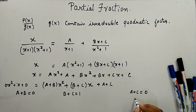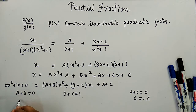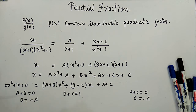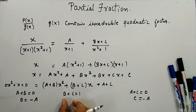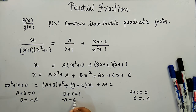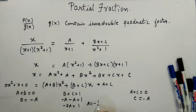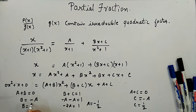From A + B = 0 and A + C = 0, we get C = -A and B = -A. Substituting into B + C = 1 gives -A - A = 1, so -2A = 1, meaning A = -1/2. Therefore C = 1/2 and B = 1/2.